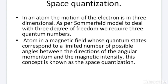The second concept of the Vector Atom Model is space quantization. In an atom, the motion of the electron is in three dimensions. As per the Sommerfeld model, to deal with three degrees of freedom, we require three quantum numbers. An atom in a magnetic field has a quantum state corresponding to a limited number of possible angles between the direction of the angular momentum and the magnetic intensity. This concept is known as space quantization.